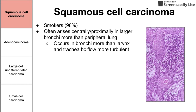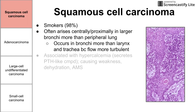This occurs in the bronchi more than in the larynx and trachea, so closer to the lower respiratory tract, because flow becomes turbulent there. As a smoker smokes, the toxins are going to deposit where the airflow is turbulent — that is as the airflow starts to divide into the bronchi and into continually smaller sized air passages. That occurs more in the bronchi than in the larynx and trachea.